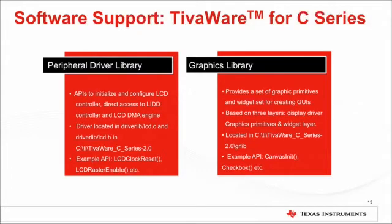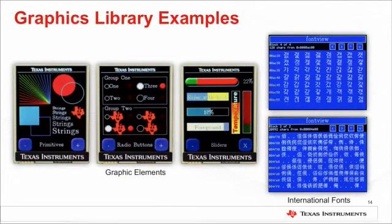We have also developed a graphics library that provides a set of graphic primitives and a widget set for creating GUIs. It is based on three layers: the display driver layer, the graphic primitives layer, and the widget layer. The source code along with extensive documentation are provided in TivaWare for C series. The graphics library is written in C and comes with several utilities that allow you to render your own fonts and create graphic elements such as check boxes, push buttons, radio buttons, sliders, list boxes, and more.